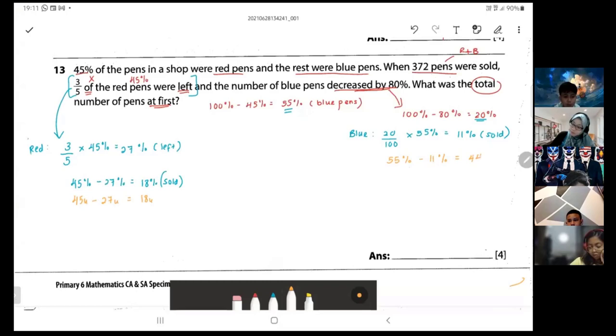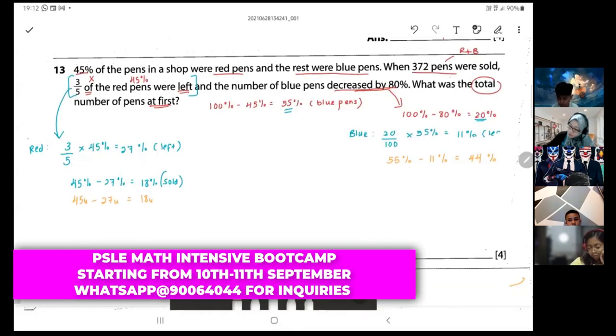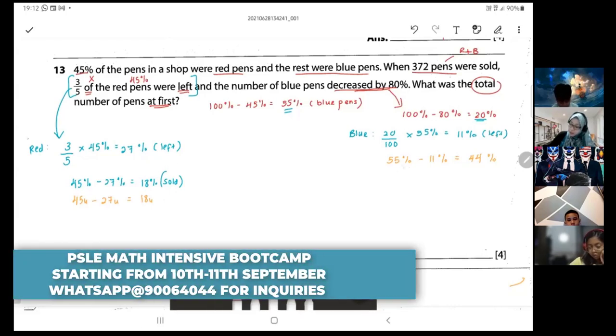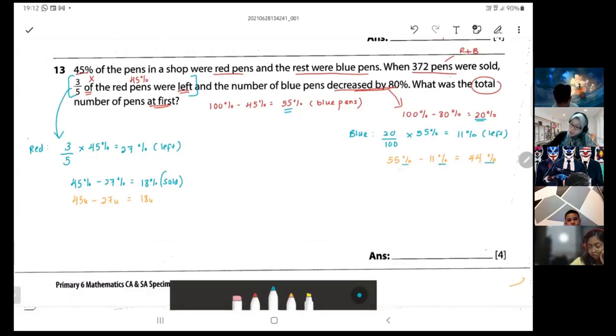Okay, sorry, I wrote wrongly. This is left over. So I can represent the percentage as units: 55 units minus 11 units equals to 44 units. This is sold.